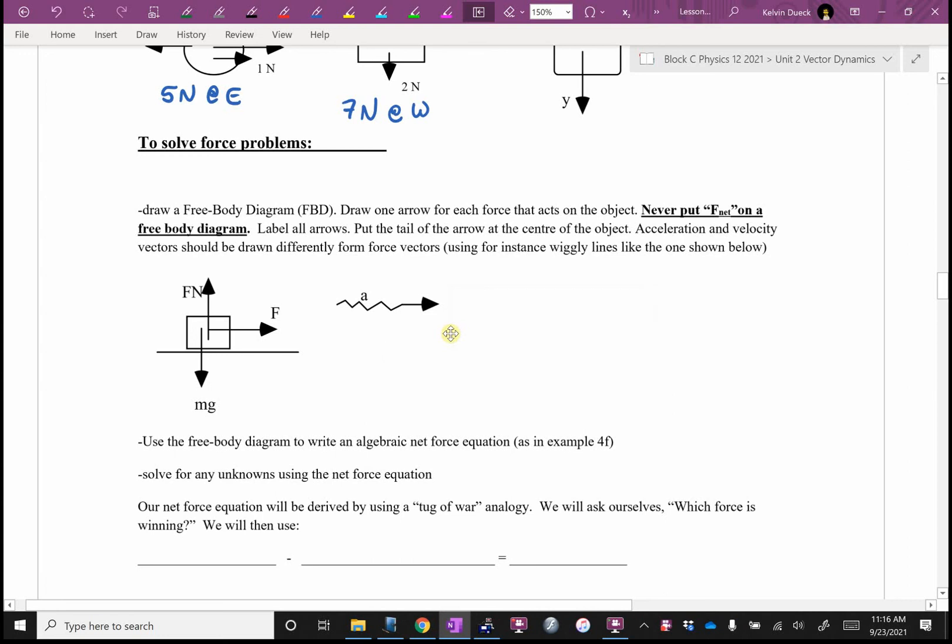Continuing from where we left off last day, how are we going to solve force problems? Well, the big tool is going to be a free body diagram, what we abbreviated as an FBD. We're going to draw an arrow for each force that acts on an object. F net will never appear on our free body diagram because that's the vector sum of all the forces on the free body diagram.